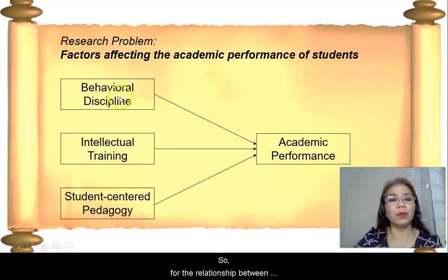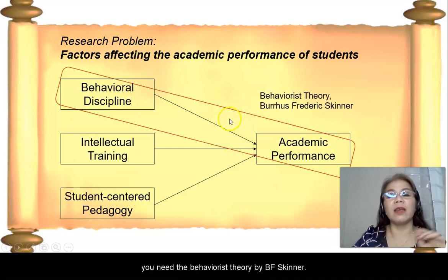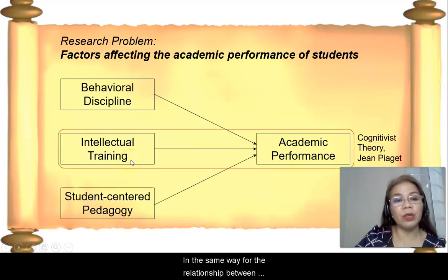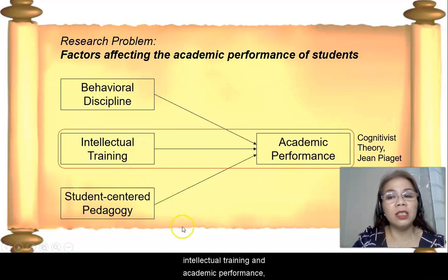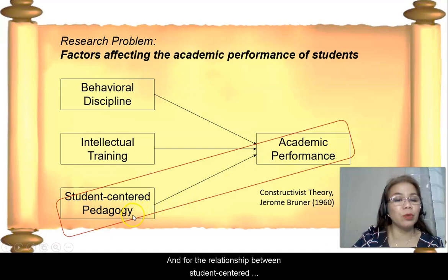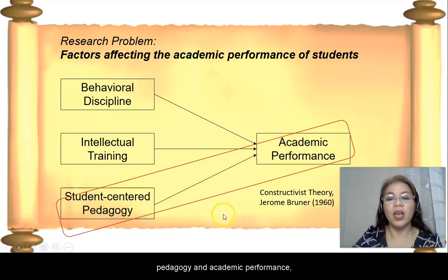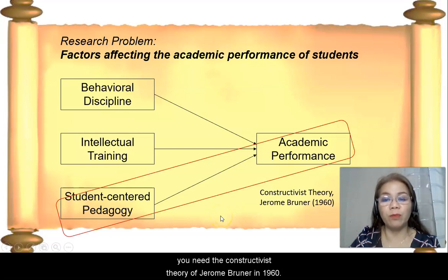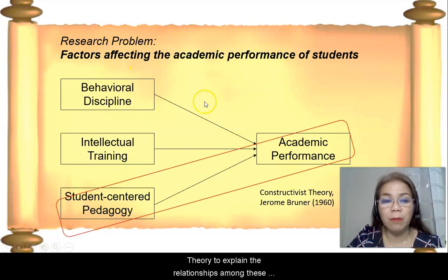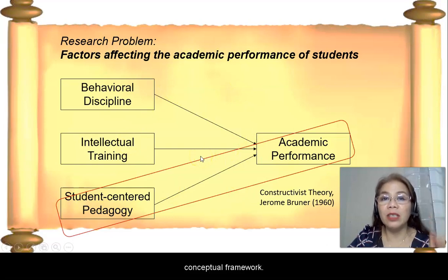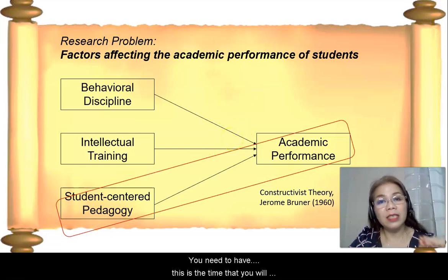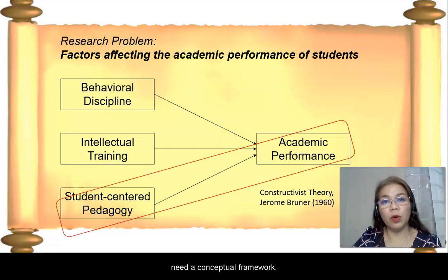So, for the relationship between behavioral discipline and academic performance, you need the behaviorist theory by B.F. Skinner. In the same way, for the relationship between intellectual training and academic performance, you need the cognitivist theory by John Piaget. And for the relationship between student-centered pedagogy and academic performance, you need the constructivist theory of Jerome Bruner in 1916. You see, since you don't have a single theory to explain the relationships among these variables, you need to have a conceptual framework.